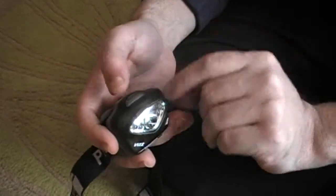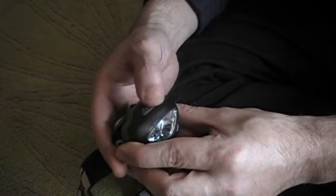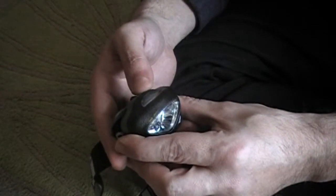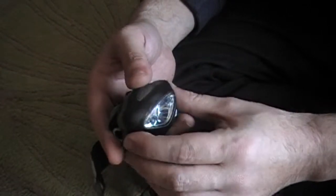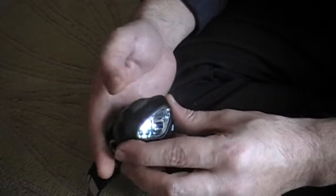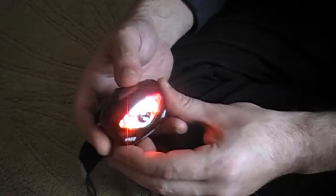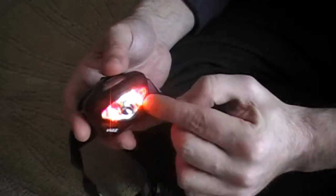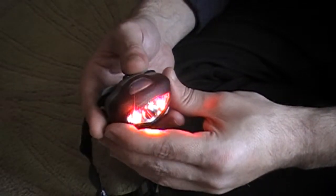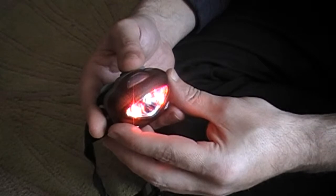So if you triple tap that, it'll lock it out so that just pressing it once will not turn it back on. That'll help prevent accidental usage inside your backpack or anything like that. So if you press it once, you get your two LED red. This will help minimize your damage to your night vision so you can still see in the evenings.